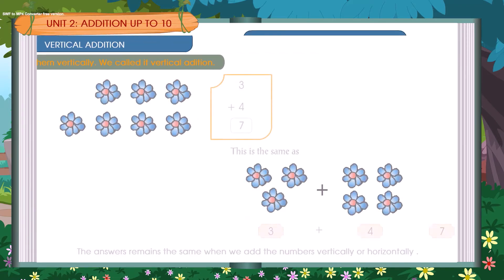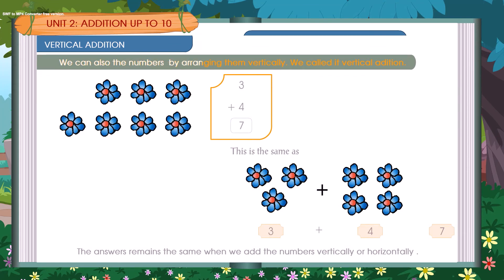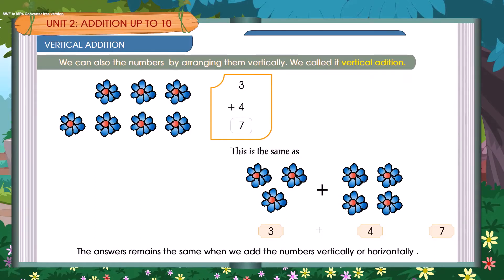Vertical addition. We can also add the numbers by arranging them vertically. We call it vertical addition. 3 plus 4 is equal to 7. This is the same as 3 plus 4 is equal to 7. The answer remains the same when we add the numbers vertically or horizontally.